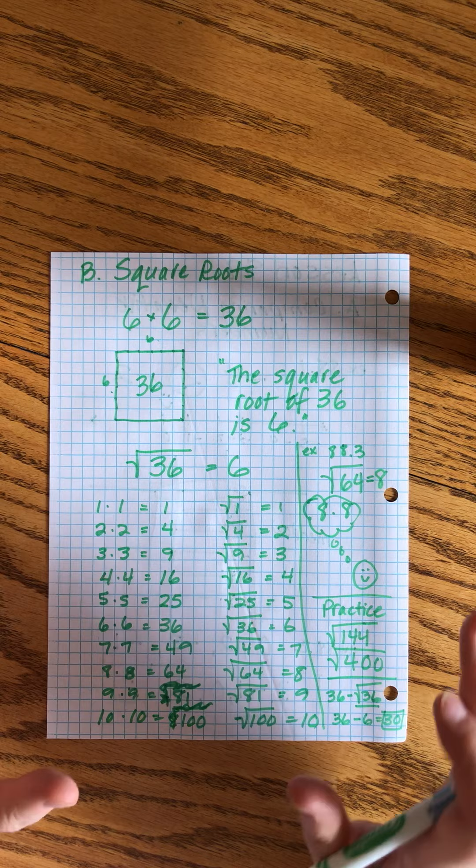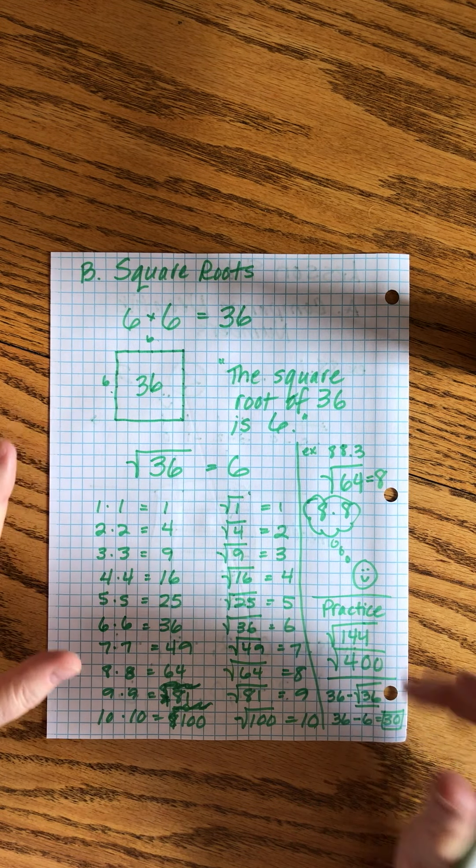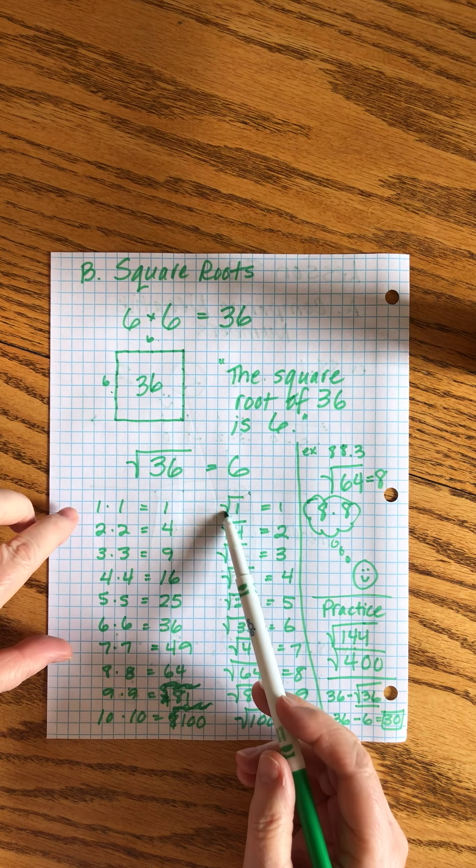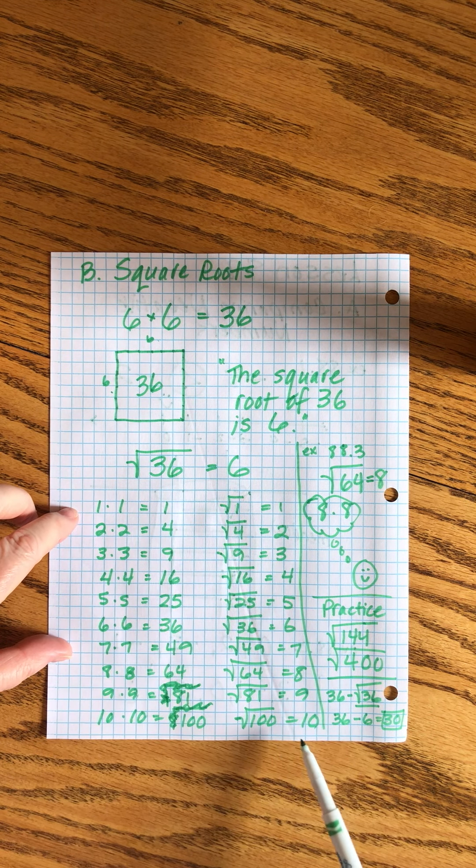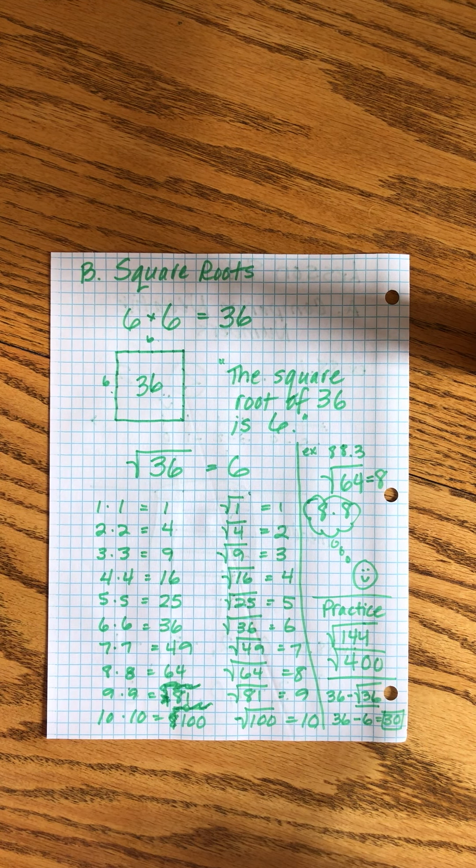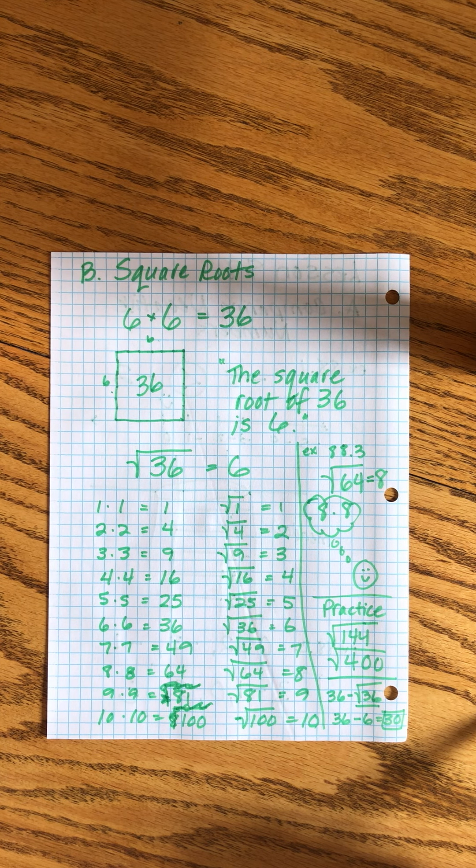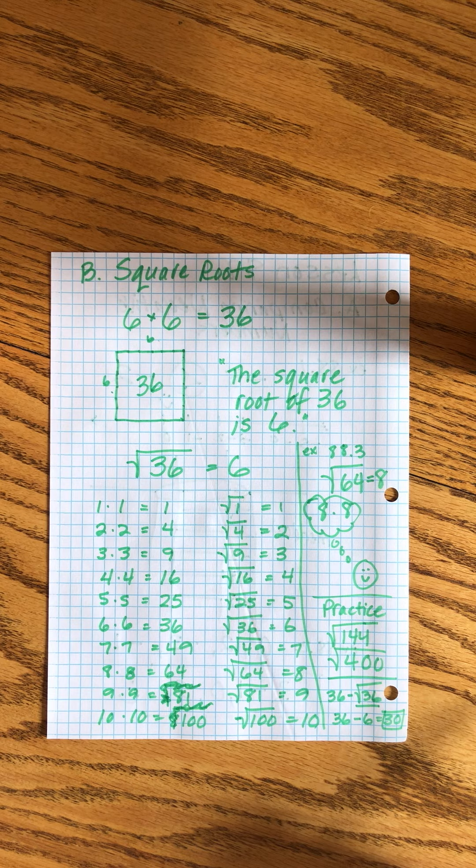That's the end of lesson 88. We're going to be working with square roots a ton. Just remind yourself that there's no new math facts here, it's just a new symbol and a new way of thinking about it. But all of the facts are exactly the same as what you already know. All right, that is the end of lesson 88. Thank you.